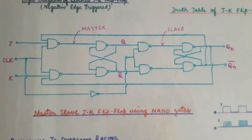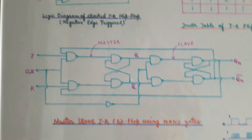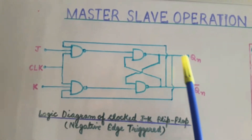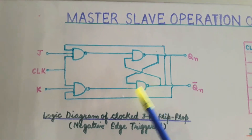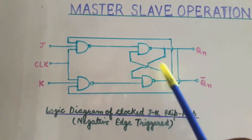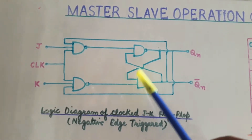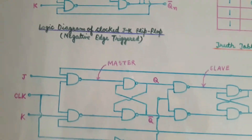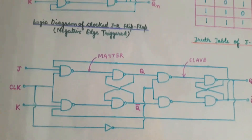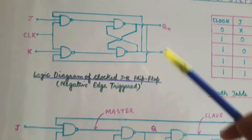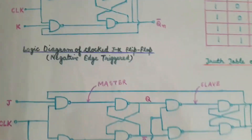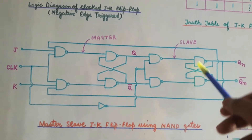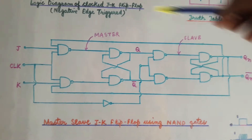Let's now see how the master-slave JK flip-flop operates. As you can see in this figure, this is the circuit of a simple JK flip-flop. The problem of racing is because of the feedback, so we will have to design a circuit to eliminate the effect of this feedback. To do this, we add another stage similar to the existing one, remove the feedback, and draw the circuit as shown.